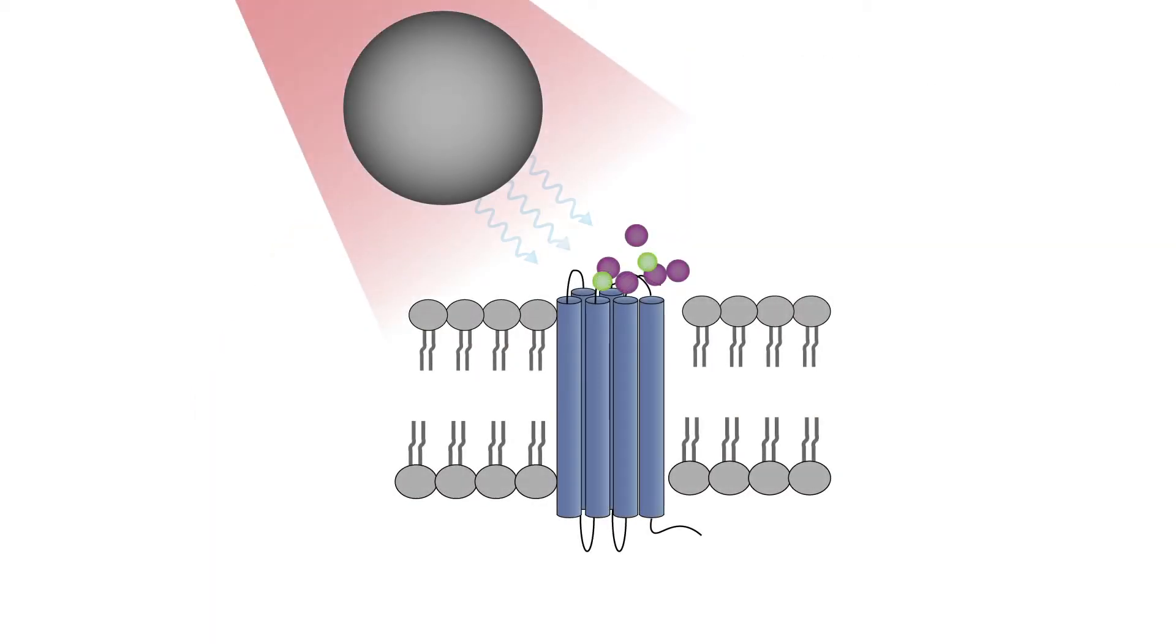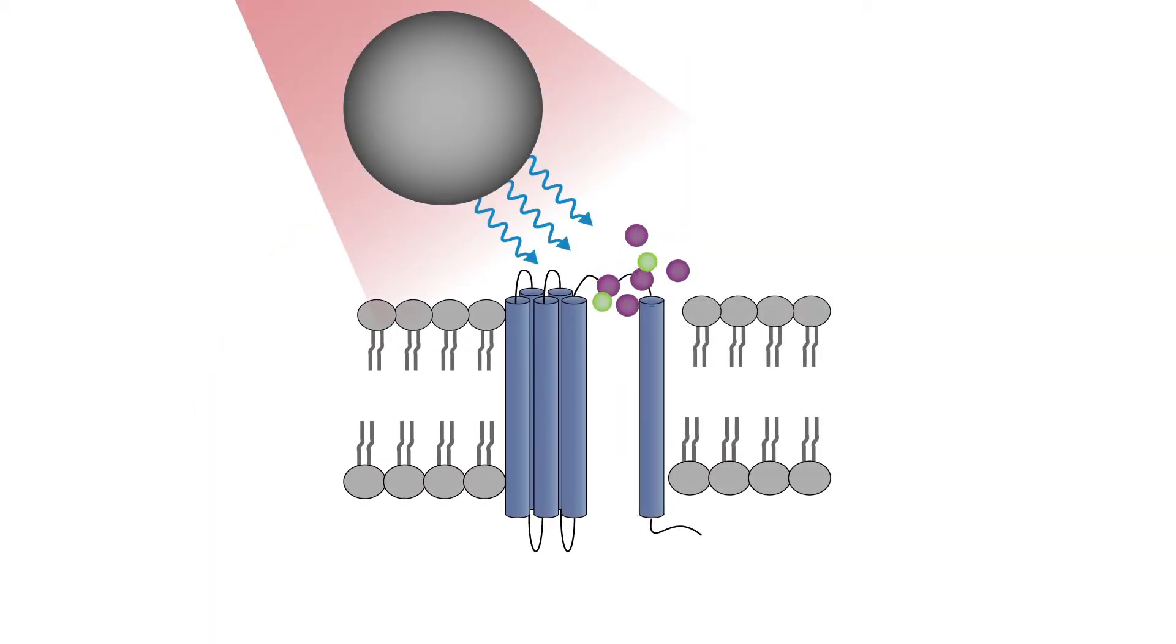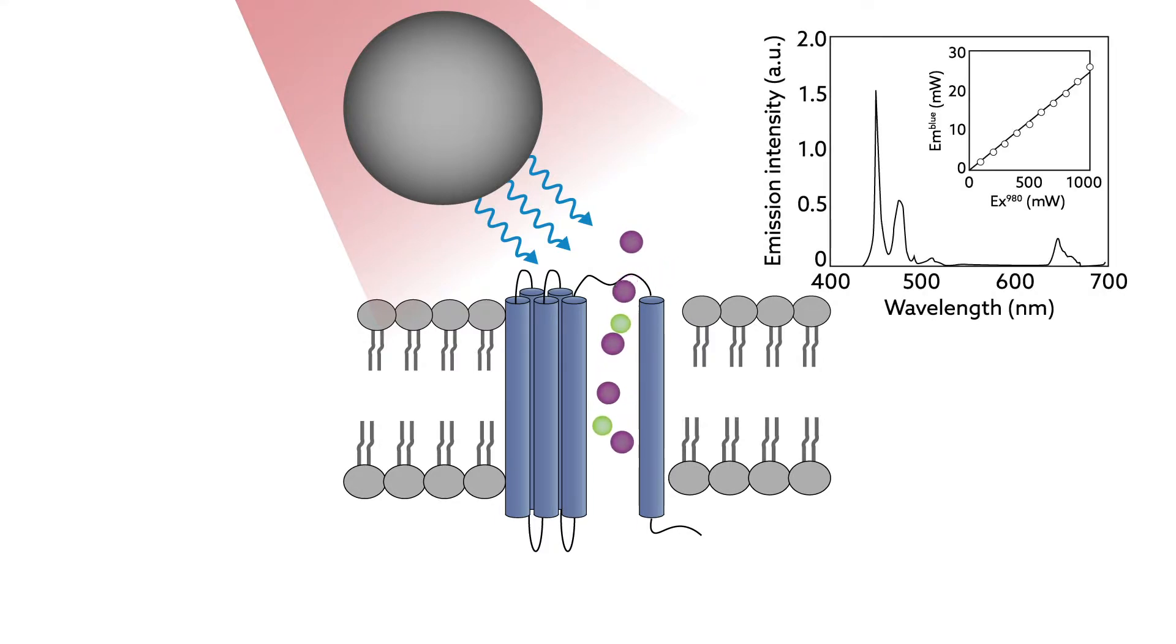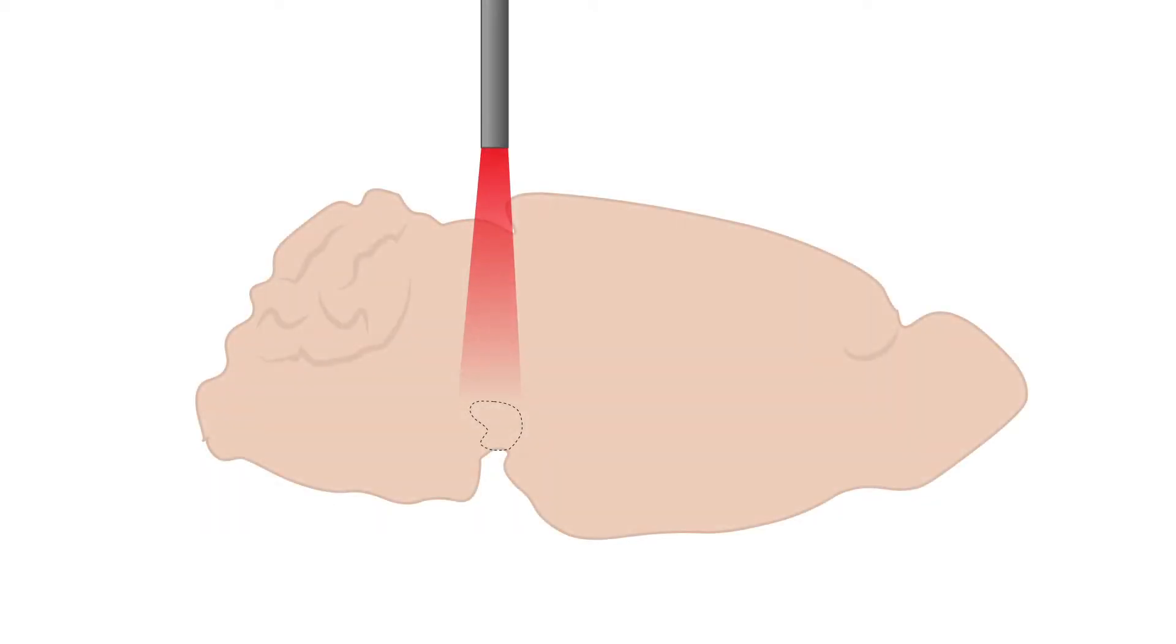The team accomplished this using a special type of nanoparticle known as an up-conversion nanoparticle, so named for its ability to transform, or up-convert, near-infrared light into visible output. Near-infrared light penetrates deeply into brain tissue, but it's not transmitted at the right wavelength to activate light-responsive proteins. The nanoparticles bridge this gap by transforming near-infrared wavelengths into visible light, which can be picked up by the proteins. In this way, the particles can effectively expand the optogenetic range.